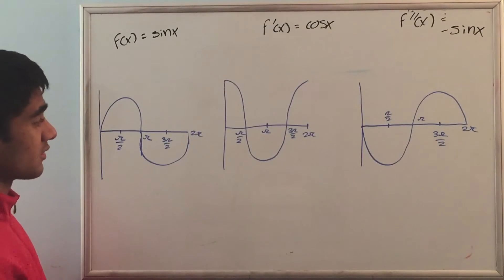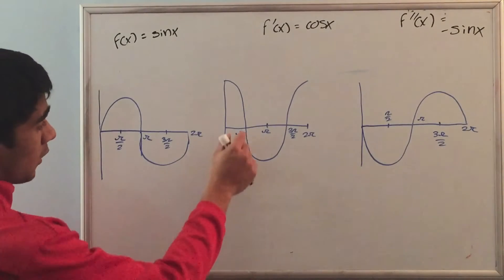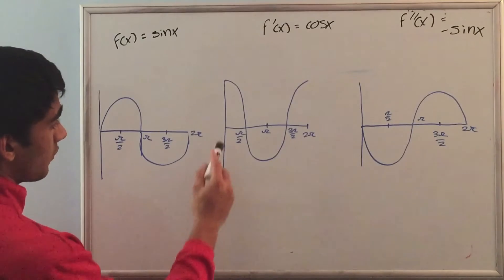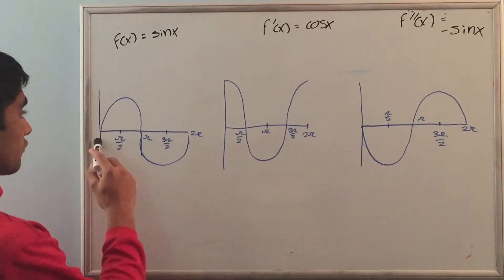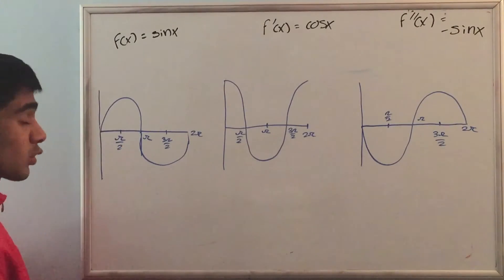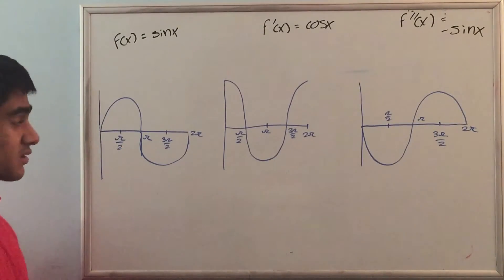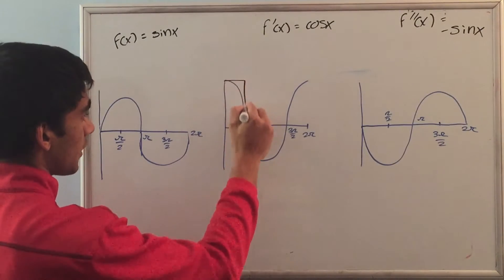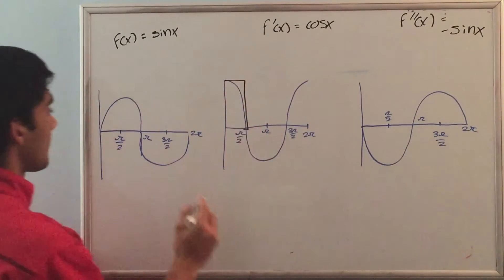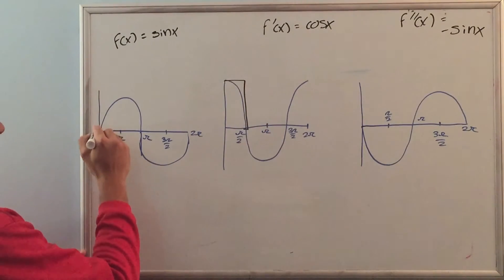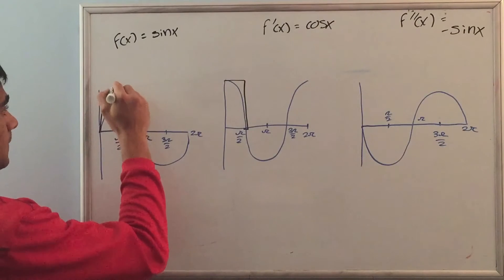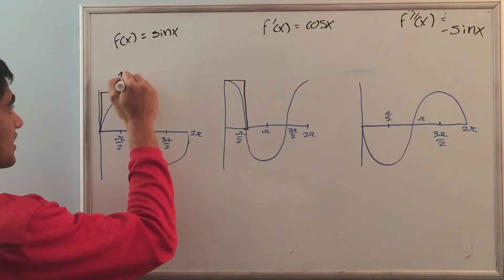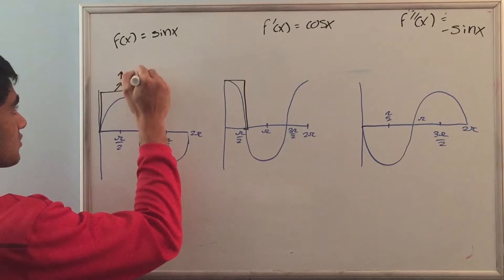The first thing we should notice is that when the derivative is positive — so from 0 to pi over 2 — the original function is increasing, whereas positive slopes. So from 0 to pi over 2, the function is increasing and has positive slopes.